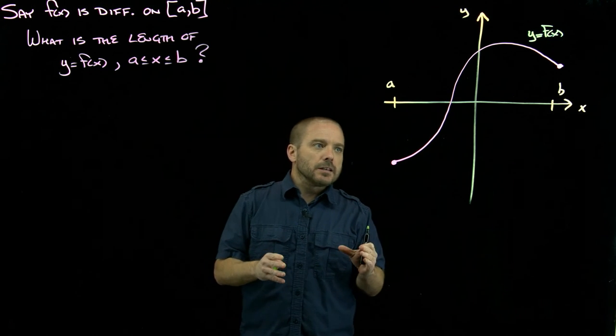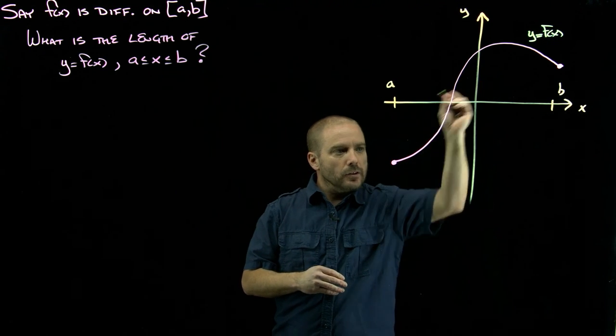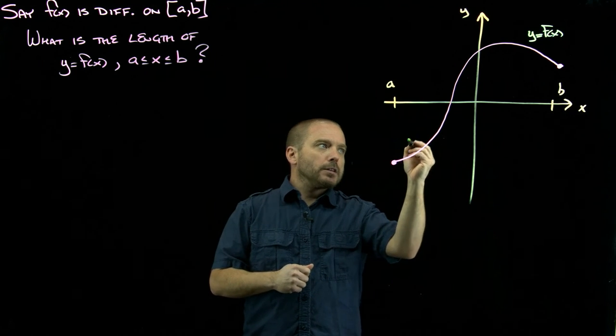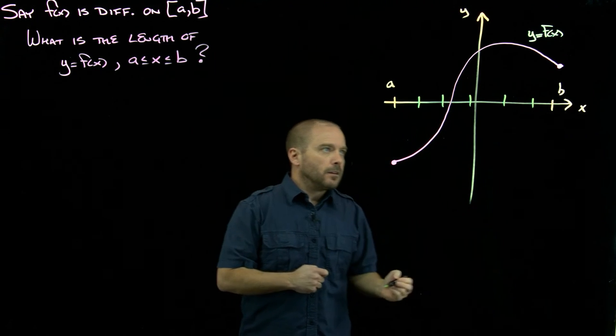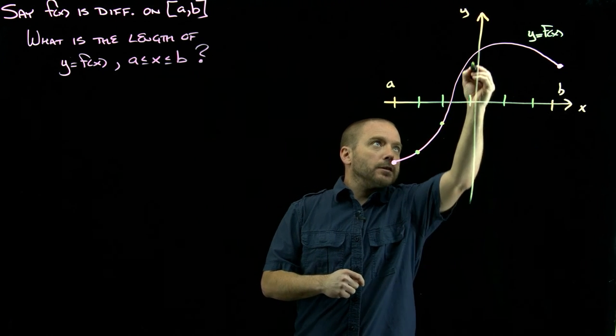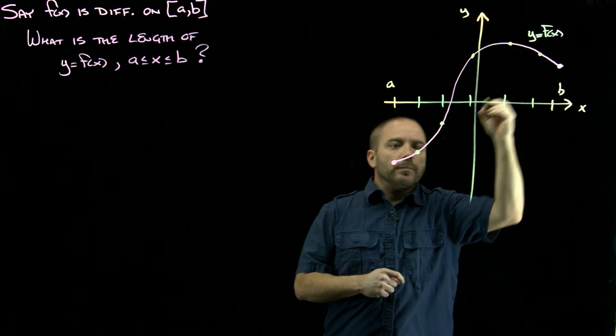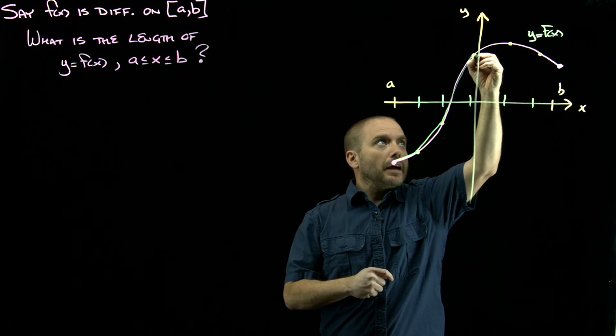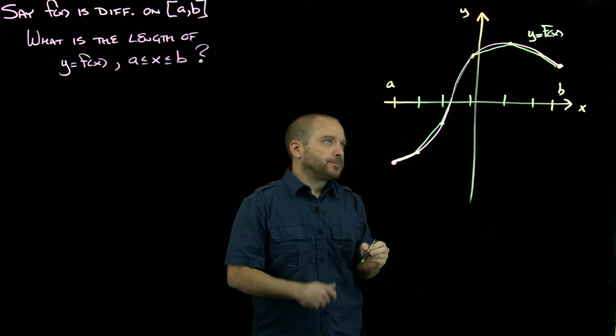We need to somehow use something we know to approximate this curve. Well, we know how to find the length of a line segment, so the idea is we would partition our x interval and join the endpoints of all those sub-intervals, creating line segments. The idea is these line segments are approximations of the curve.